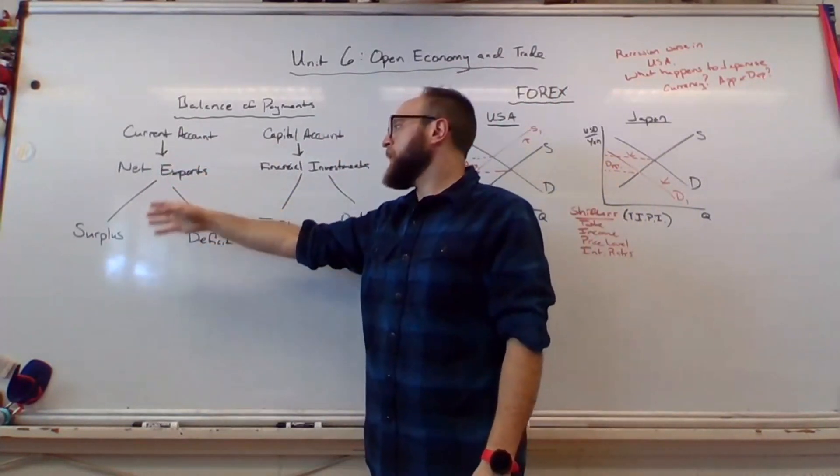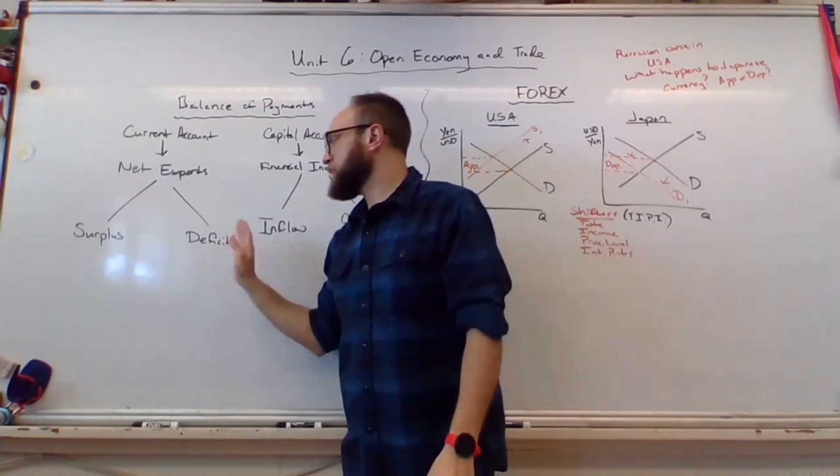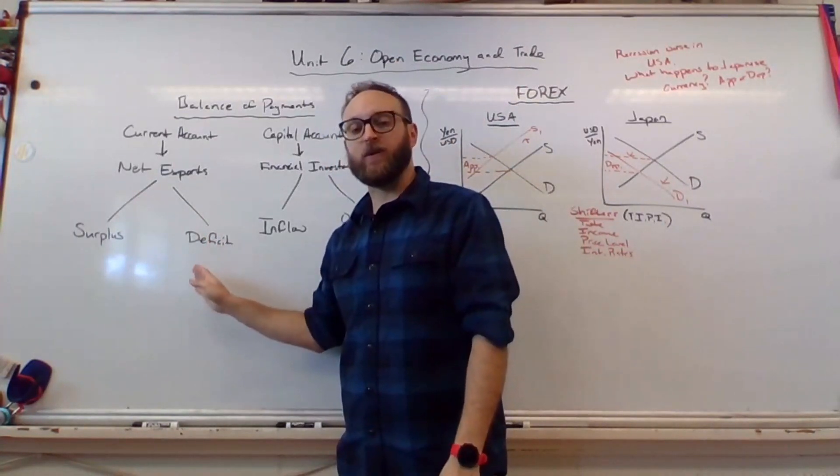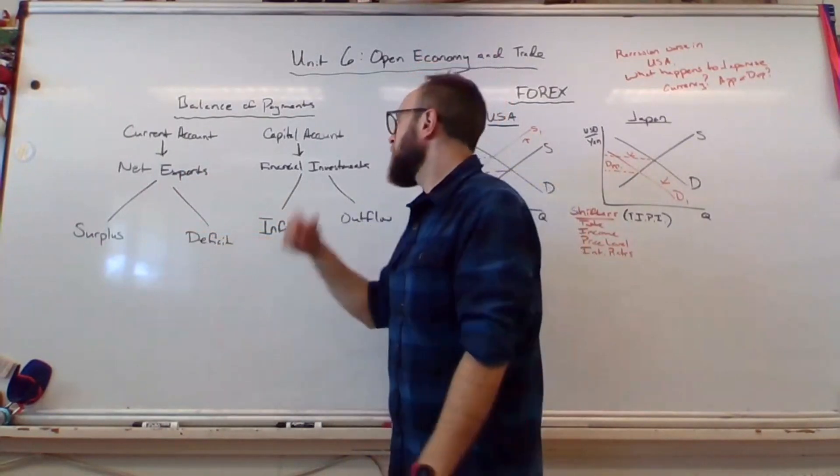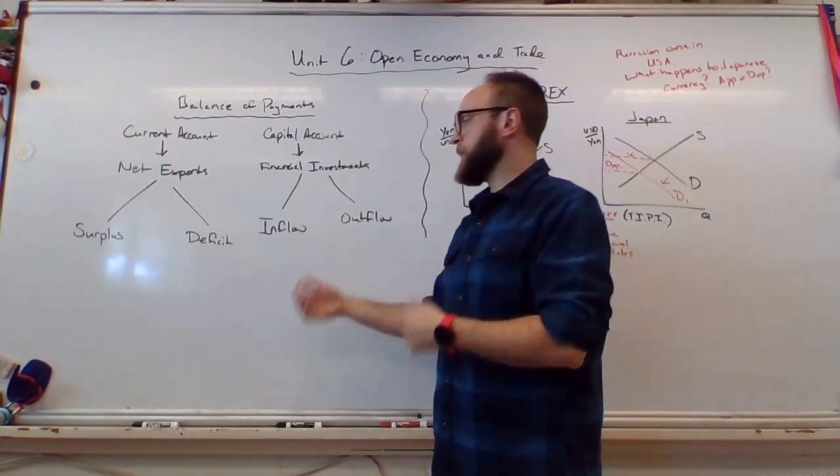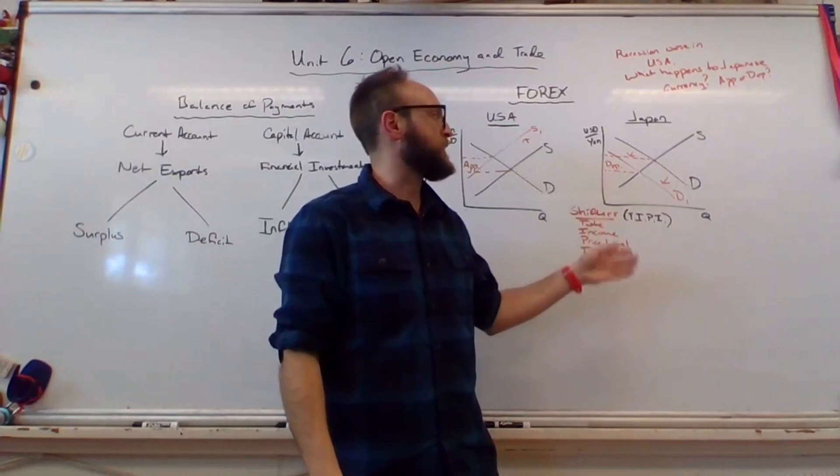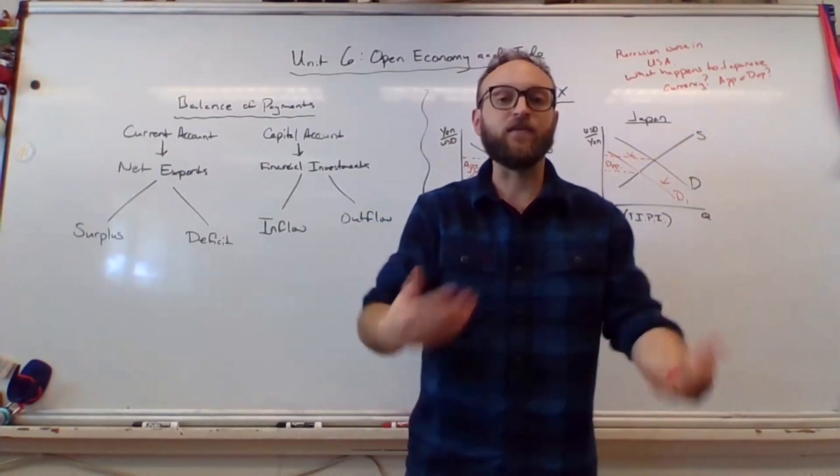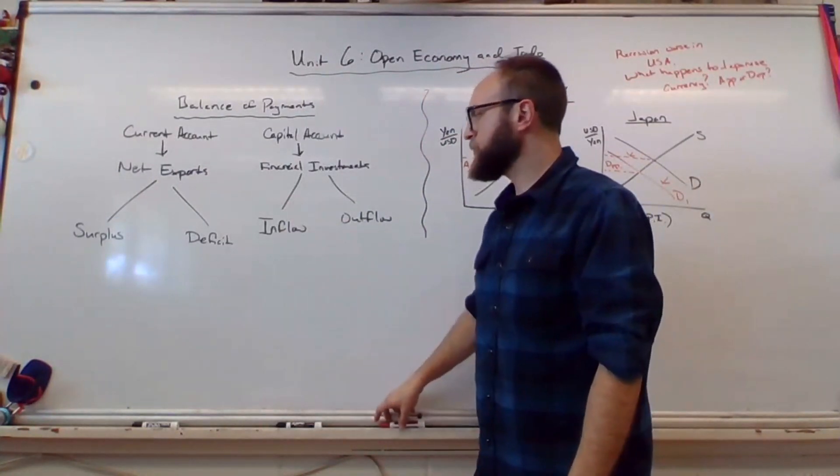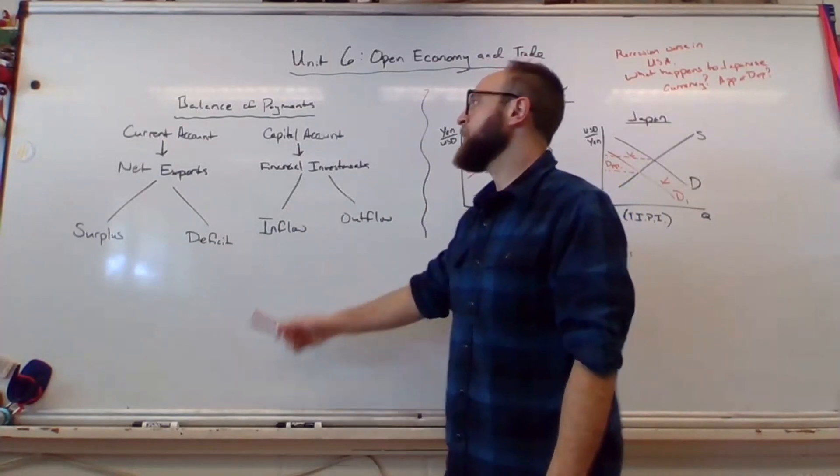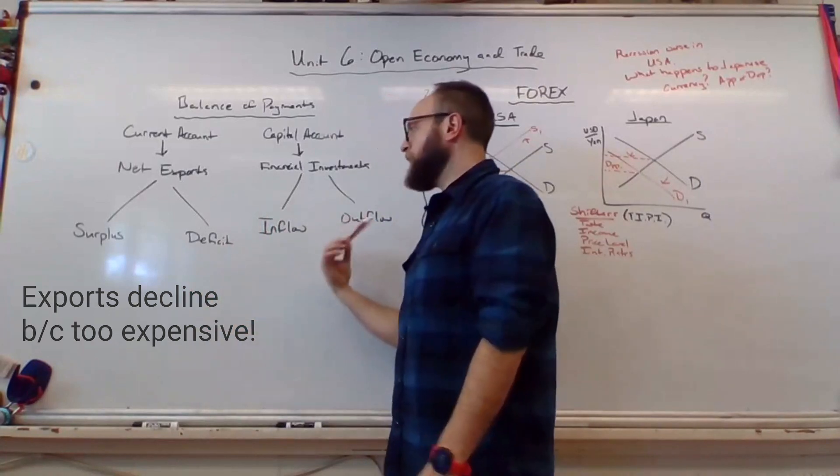Over here in the current account, if you have a surplus, that means you have more exports than imports. The United States is often running a deficit here, meaning we often have more imports than exports. So in GDP, this section of our GDP expenditure equation is usually running negative. Over here in the financial account, we have inflow and outflow. This means if you have cash coming in, this would be like appreciation on the Forex graph. If demand was rising in Japan, that would be inflow. Outflow means money's going out of that country. And the one thing you need to be aware of is usually they're opposite. So for example, if you have cash coming in, you're going to run a deficit in the current account. If you have inflow, deficit. Outflow, surplus.